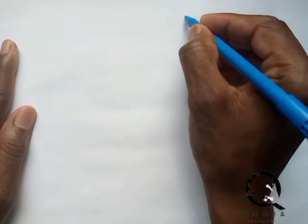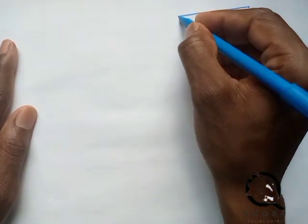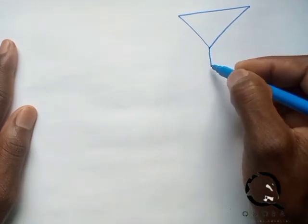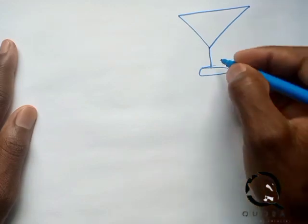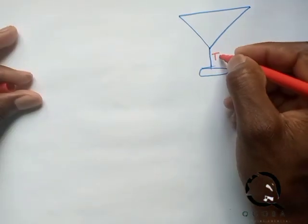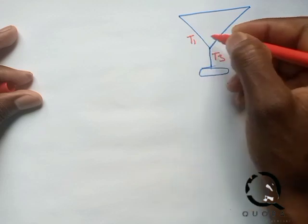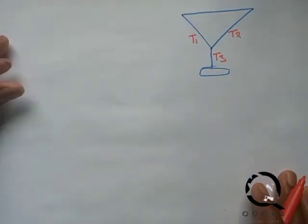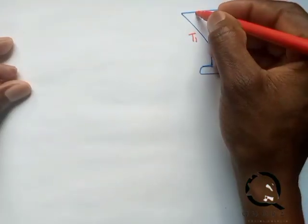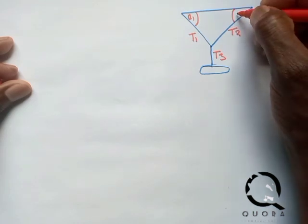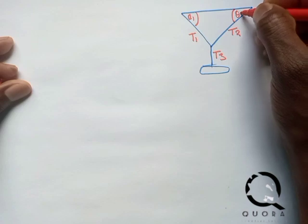So redrawing: we have the bag of cement connected to tension T3 going downward. We have T1 raised at an angle theta 1, and T2 raised at an angle theta 2. T1 is at theta 1 = 60 degrees with the horizontal, and T2 is at theta 2 = 30 degrees with the horizontal.